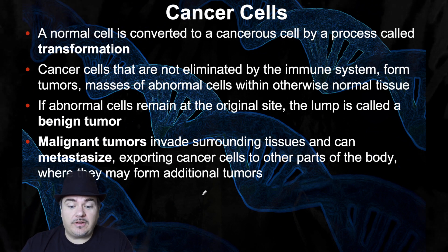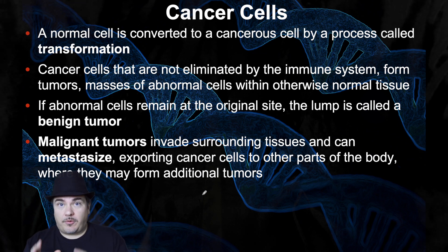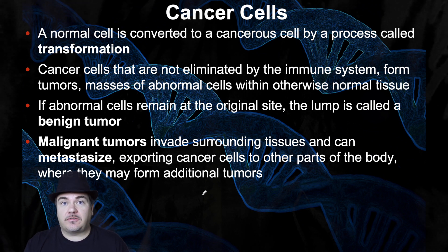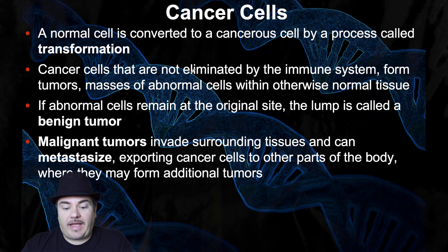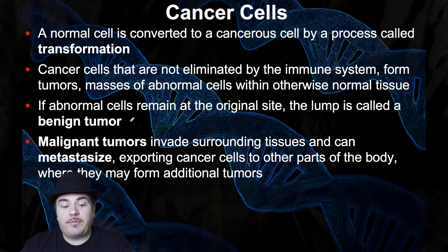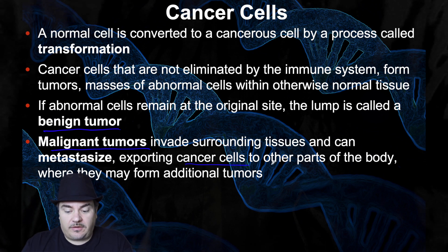A normal cell is converted into a cancer cell by a process called transformation. Cancer cells are not eliminated by the immune system — in fact, we get cancer cells more often than we realize, but our immune system usually detects and destroys them. When it misses them, they can form tumors — masses of abnormal cells within otherwise normal tissue. If abnormal cells remain at the original site, it's called a benign tumor; malignant tumors invade surrounding tissues and can metastasize, exporting cancer cells to other parts of the body.